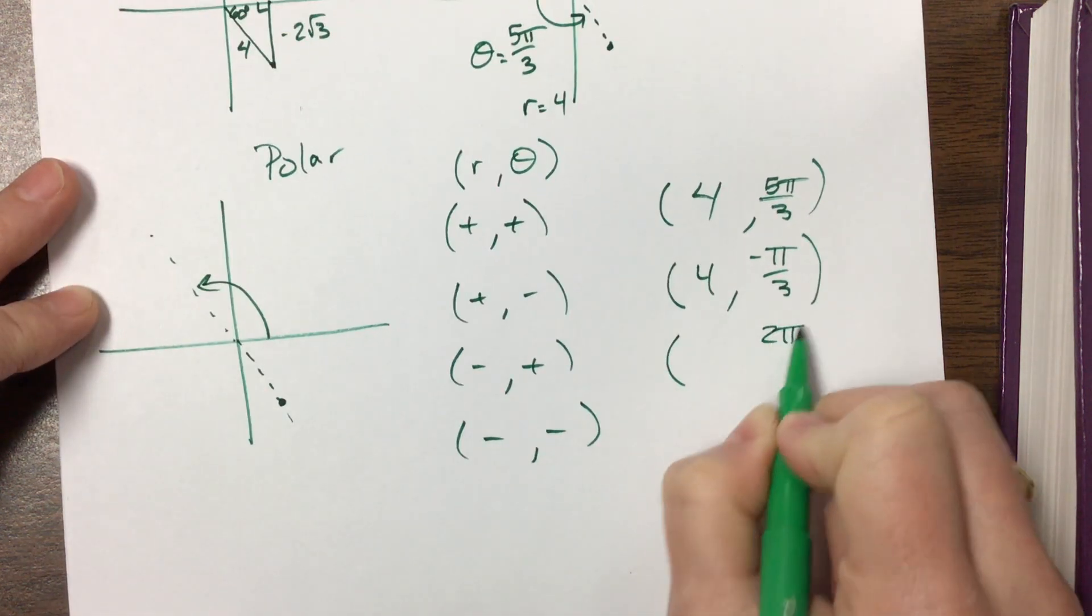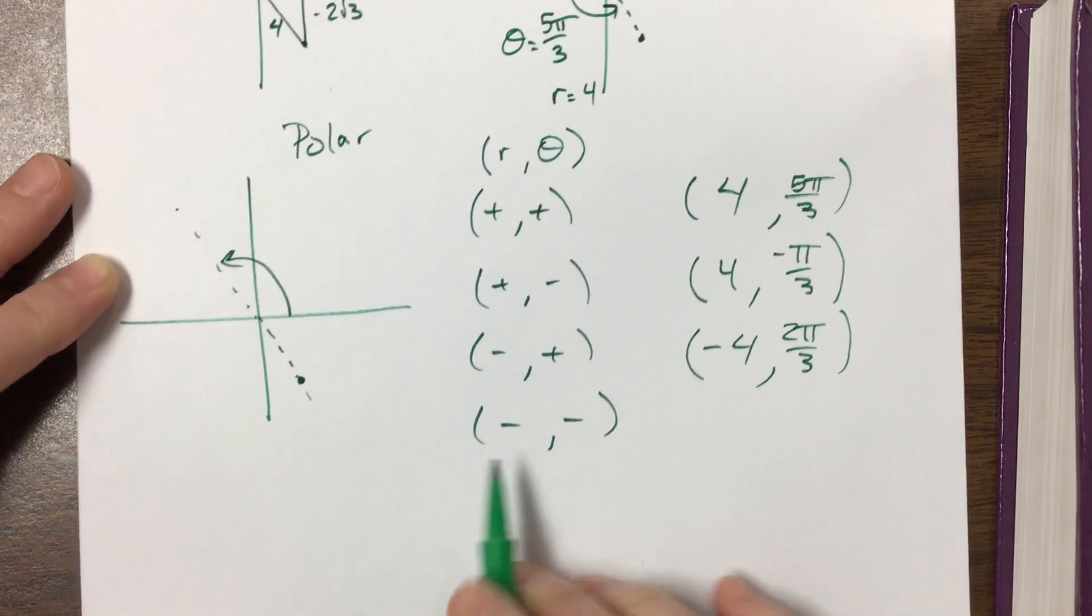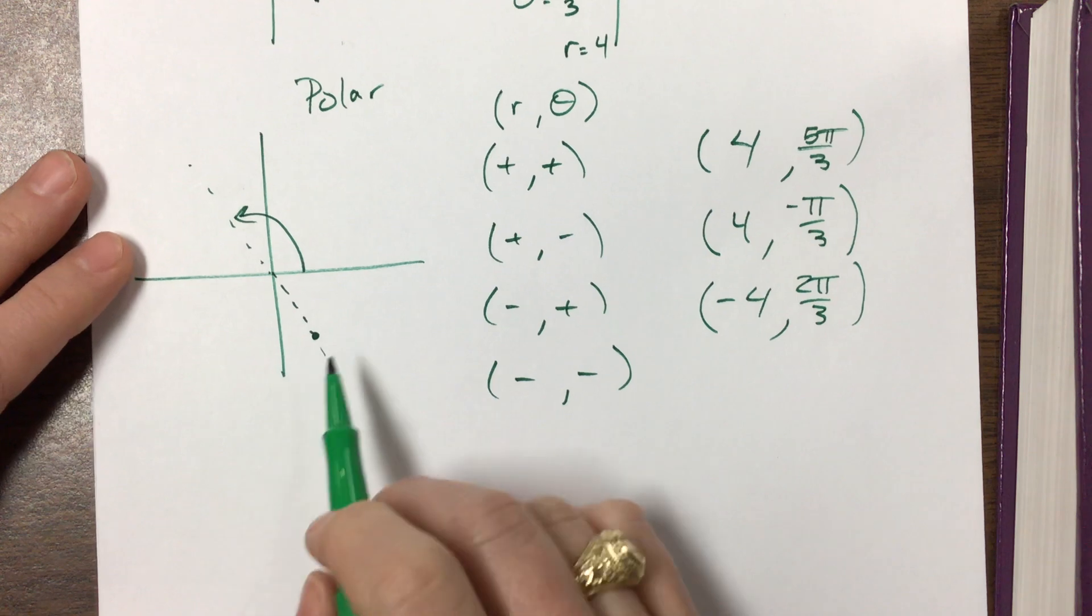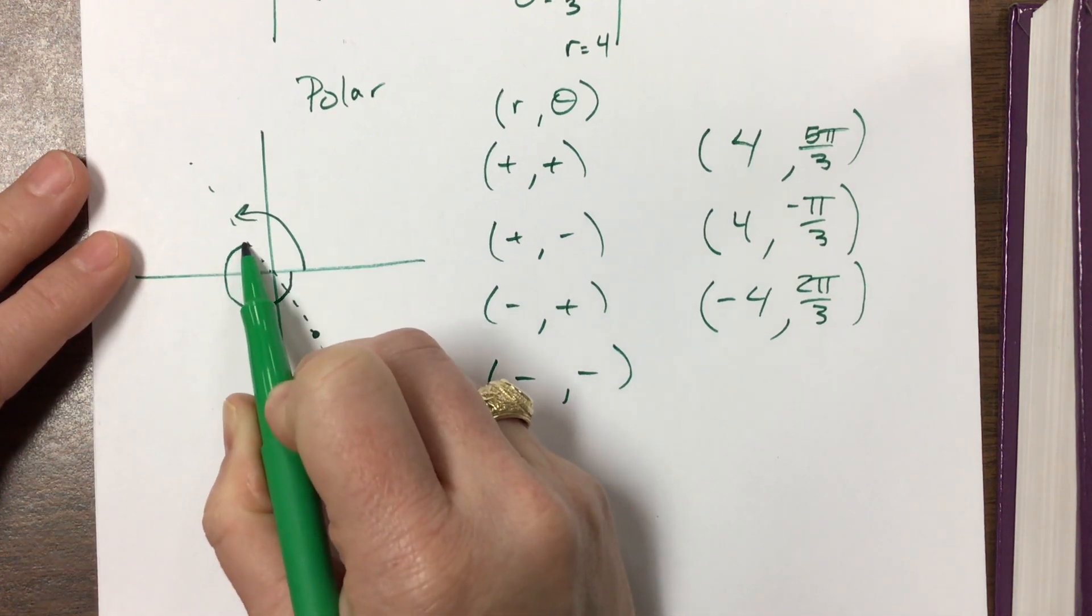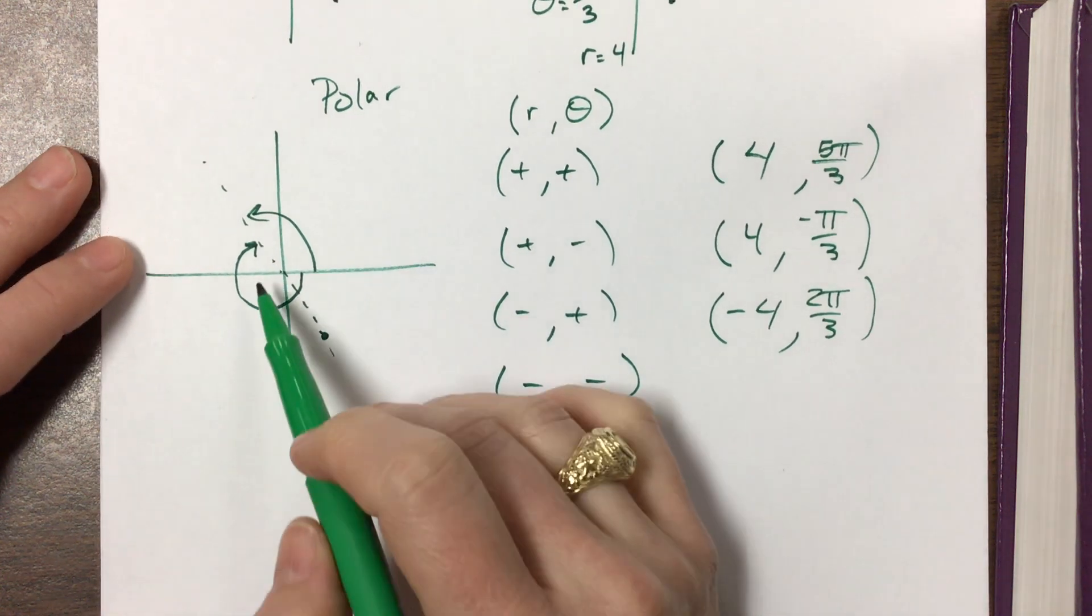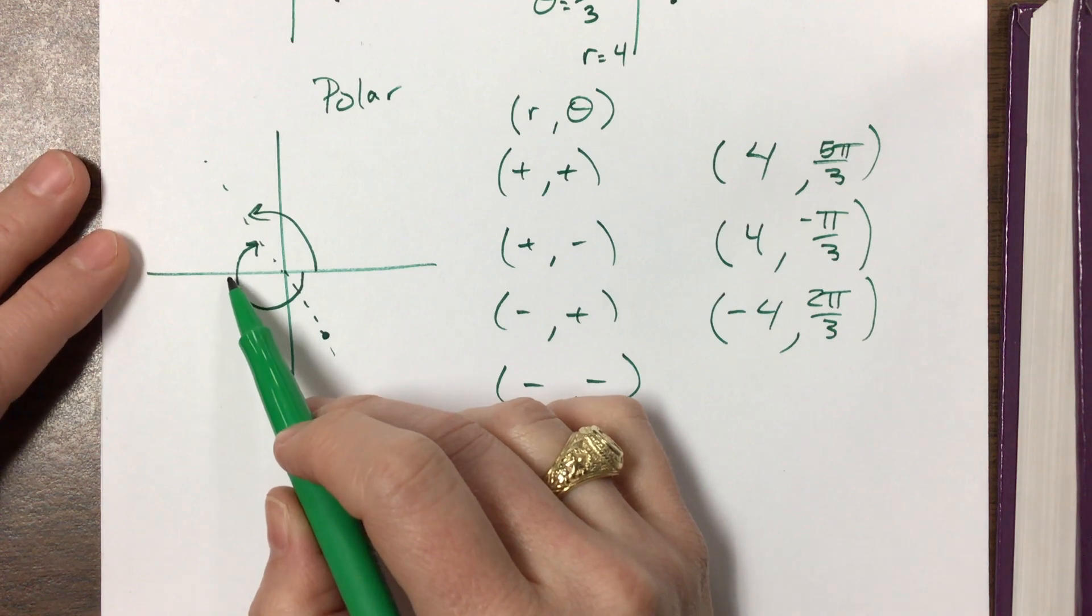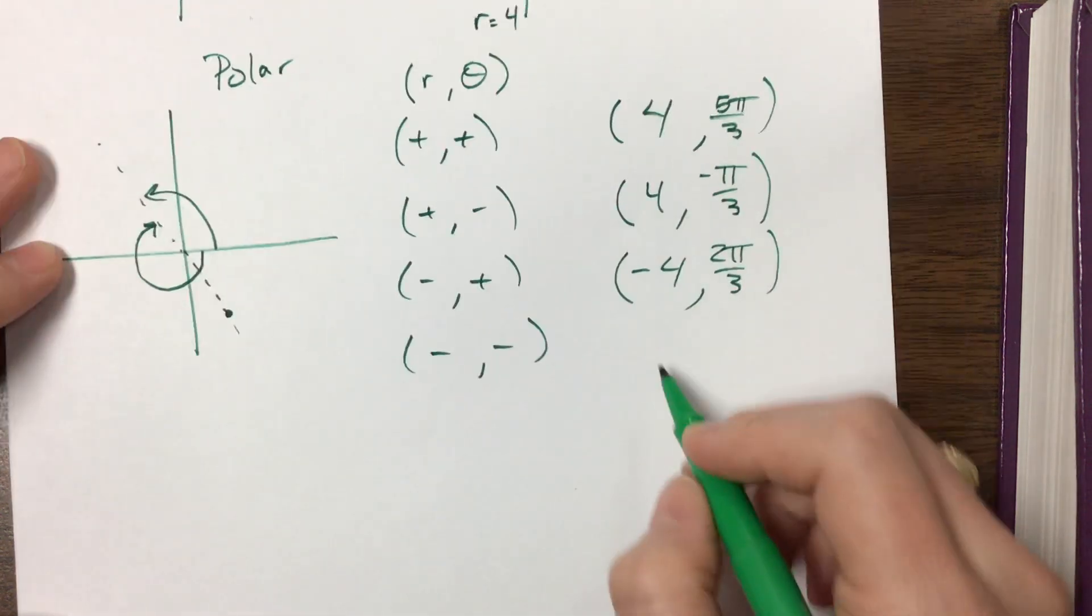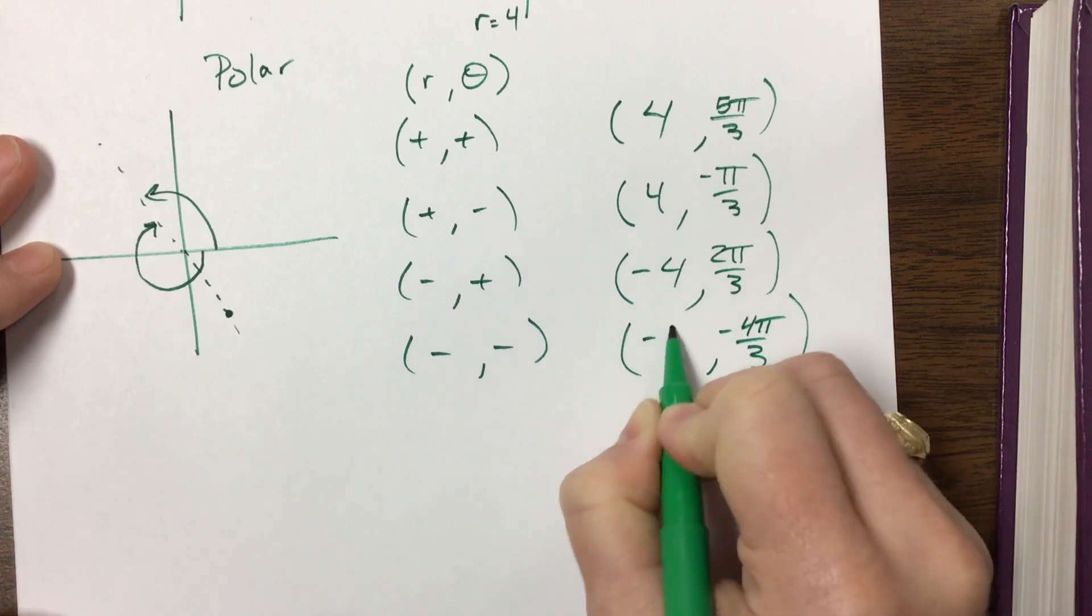The last one, negative negative, means that I need to now go from here in the negative direction to get to that theta and then turn around and go in the negative radius. So this is a negative - well this is pi, so that's 3 pi over 3, and that's one more - so that's a negative 4 pi over 3. So then the R is negative 4, the theta is negative 4 pi over 3.